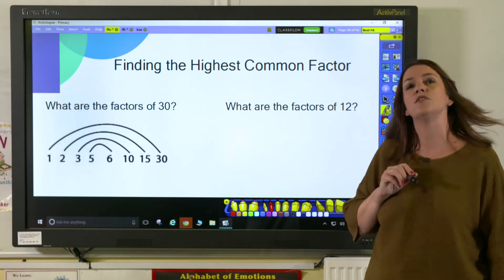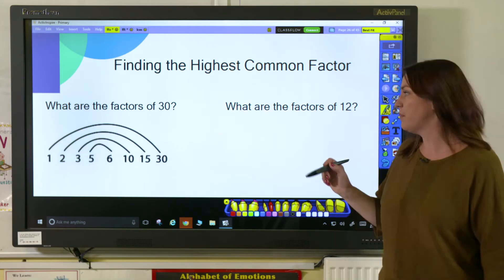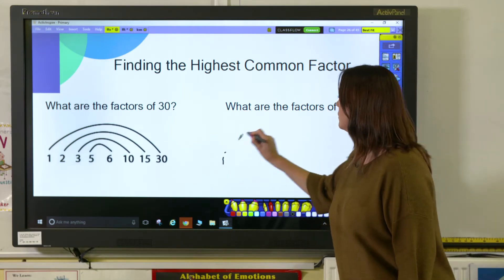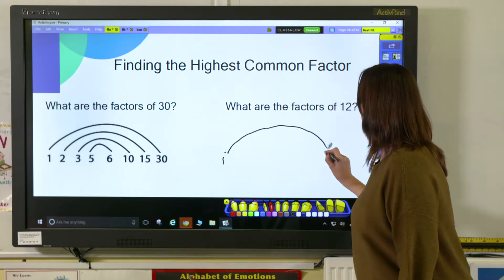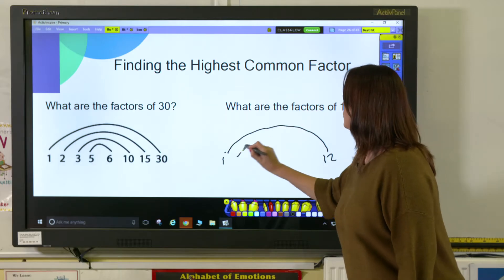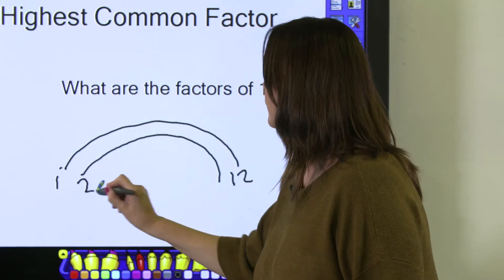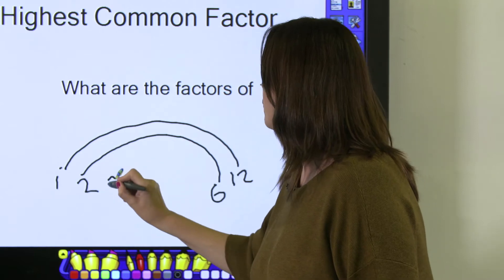So let's have a look at the factors of 12. The factor pairs that make 12 are 1 and 12, 2 and 6, and 3 and 4.